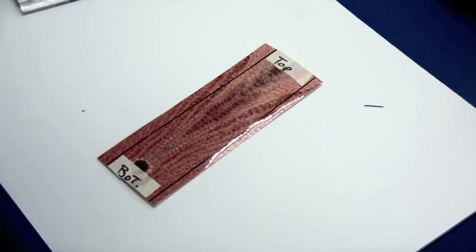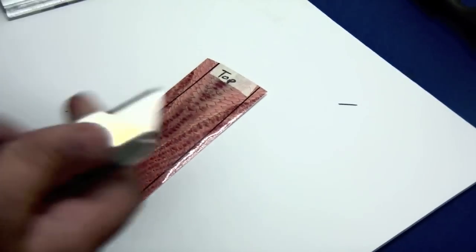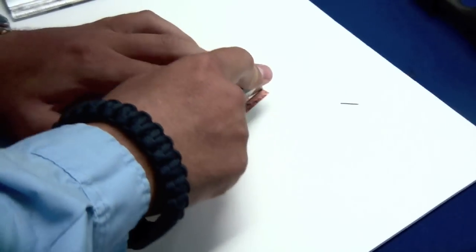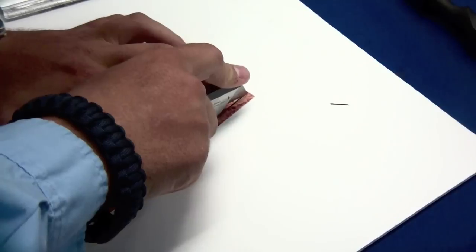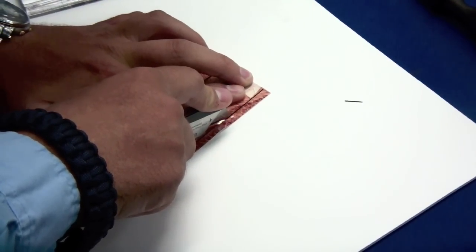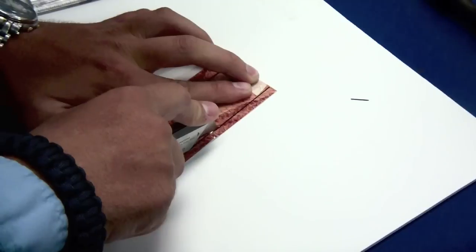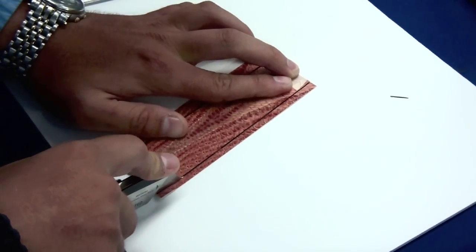Once we've got our marks there, we can go ahead and cut the piece. I'm just going to use a regular razor blade. We're going to cut on the outside of the Sharpie line to give us a little room for play on the seam.